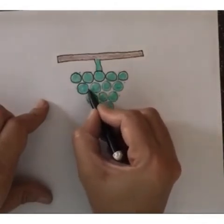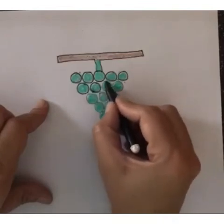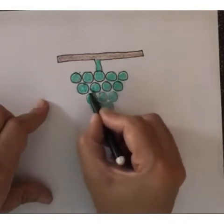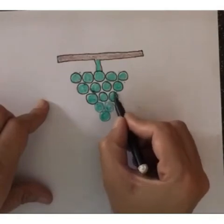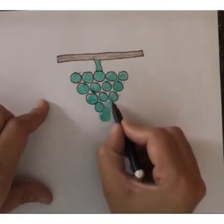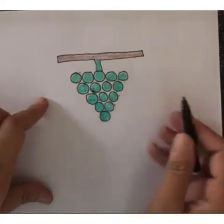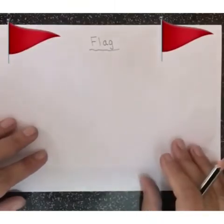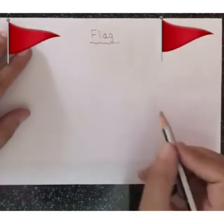Then it will look more bright. So, are you ready to make grapes with circles? Okay? Thank you. Now next we will make a flag with the shape triangle.